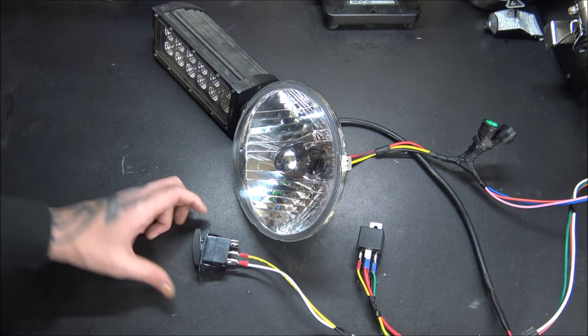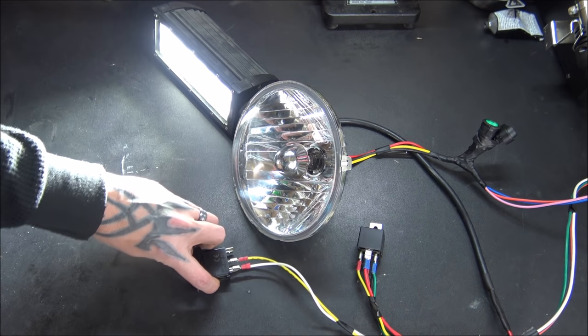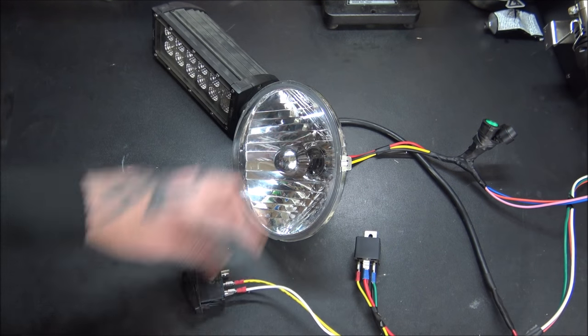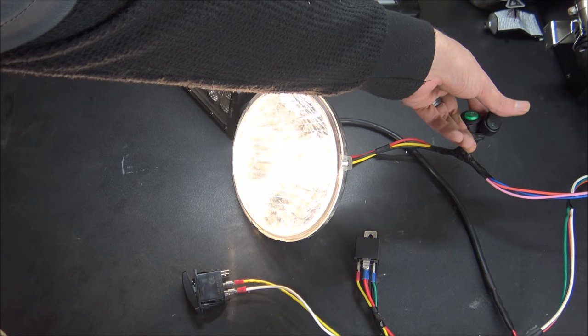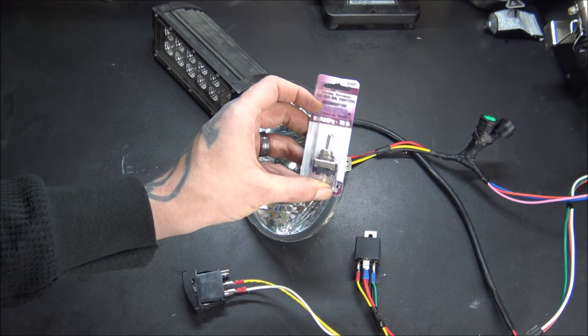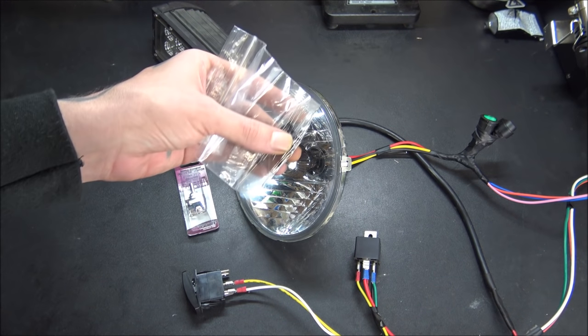I've been getting a lot of questions about how someone could hook up their light bar so it will function by itself, but also come on the same time you turn on your high beams. Well, that can be done with a three-way switch and a diode.